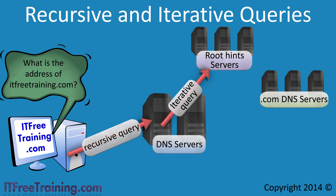If the DNS server attempts to send a recursive query to a root hint server, this request would be rejected. Since a root hints server forms the top of the hierarchy of DNS, it is important they are always available. For this reason, they cannot afford to get overloaded resolving DNS requests, and thus you can see why two types of DNS queries are required.